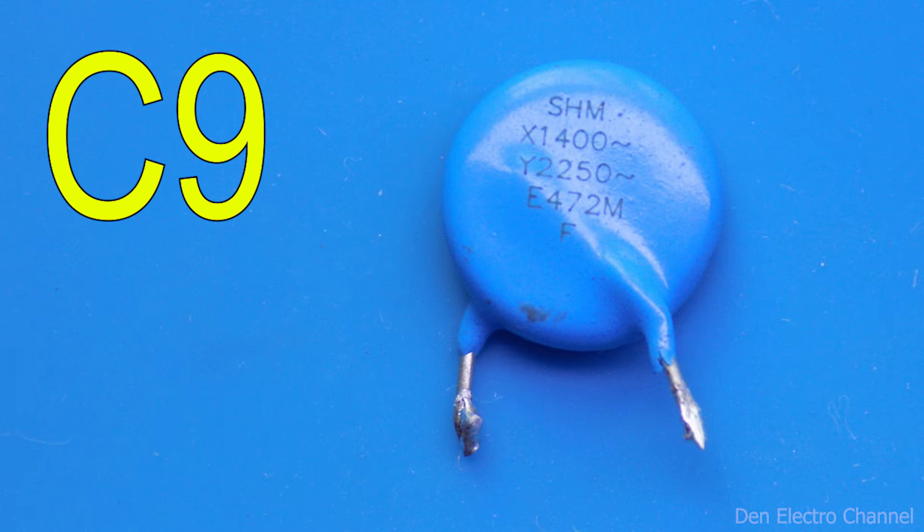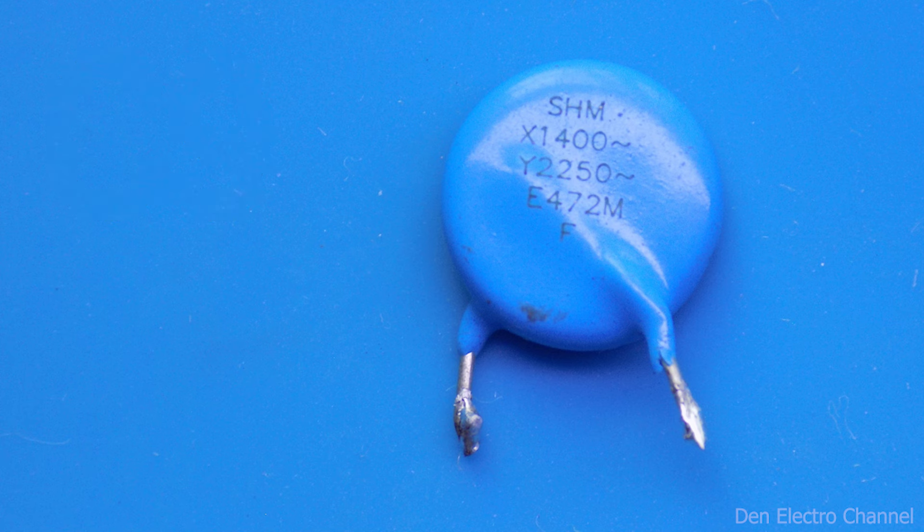Capacitor C9 is Y-type, set to 4.7 nanofarads. For maximum suppression of interference from the primary winding to the secondary.